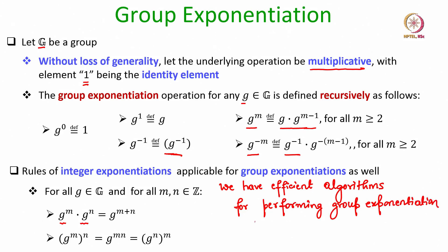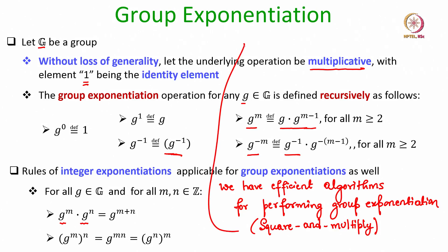For instance, we can use the square-and-multiply approach, which is a very nice algorithm. Its description can be found in any standard text on number theory, or you can refer to my NPTEL course on discrete mathematics or foundations of cryptography.